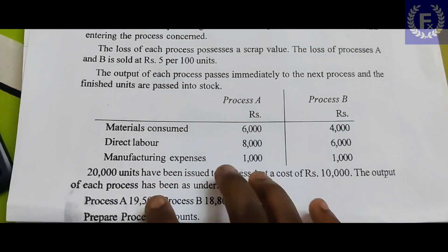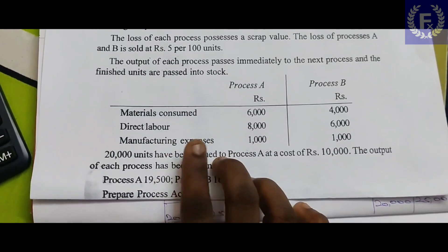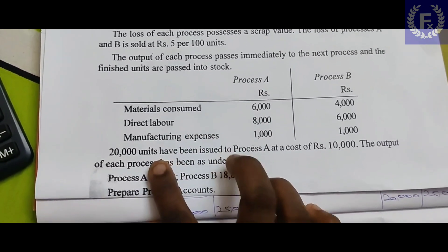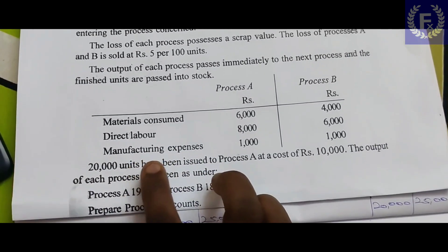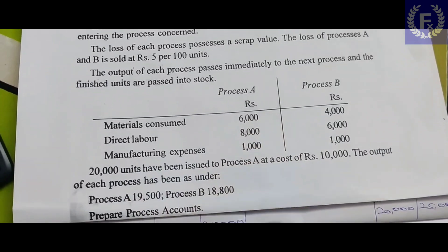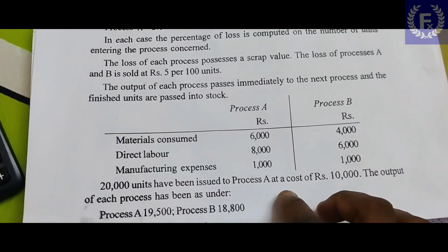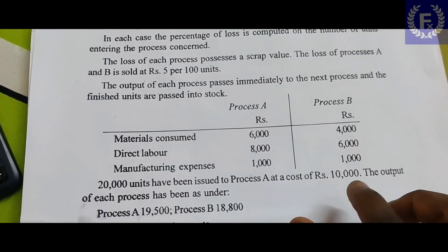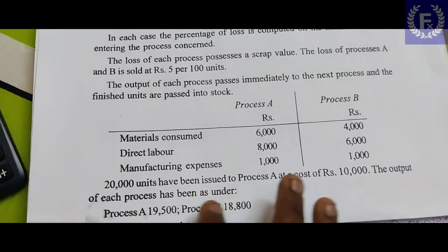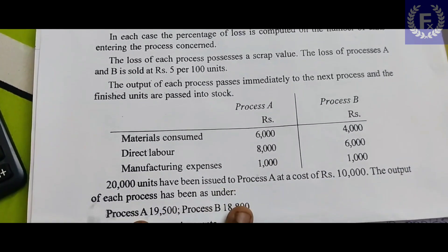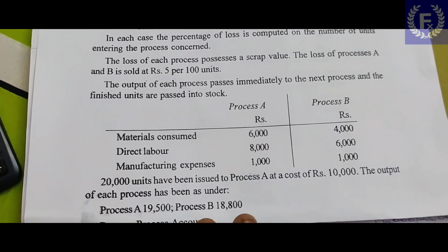The data given includes Material Consumed, Direct Labor, and Manufacturing Expenses. 20,000 units have been issued to Process A at a cost of rupees 10,000. The actual output of Process A is 19,500 units, and the actual output of Process B is 18,800 units.